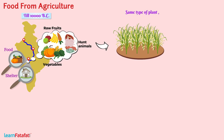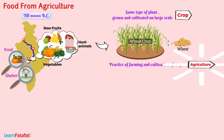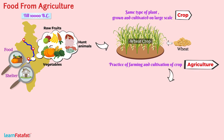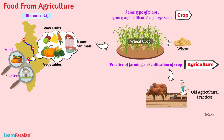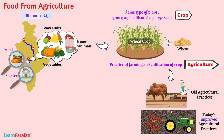The same type of plant — for example, wheat — that is grown and cultivated on a large scale is called a crop. The practice of farming and cultivation of crops is called agriculture. As compared to age-old practices, today agricultural practices are much more improved.